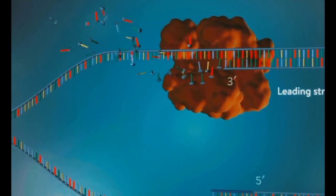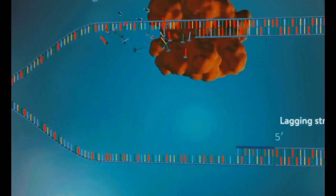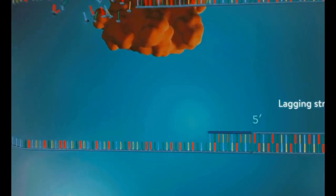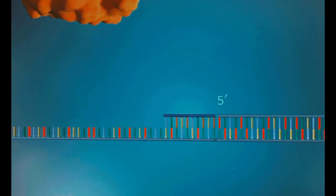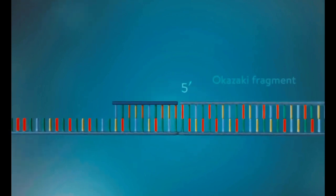The other strand, the lagging strand, cannot be made in this continuous way because it runs in the opposite direction. The DNA polymerase can therefore only make this strand in a series of small chunks, called Okazaki fragments.